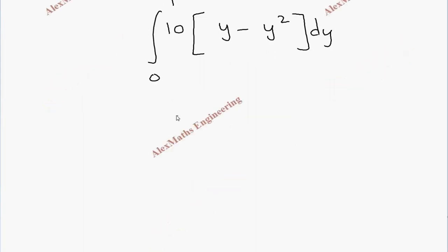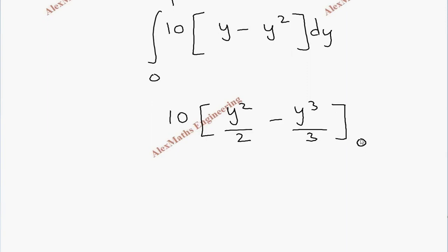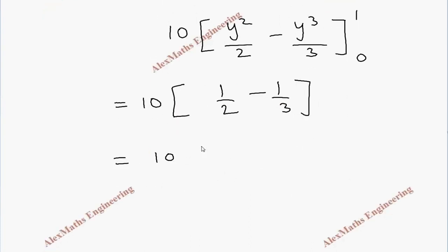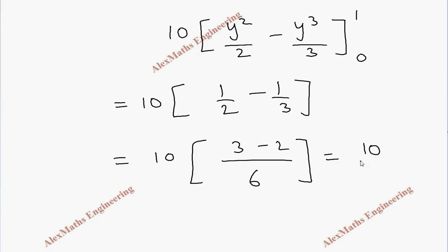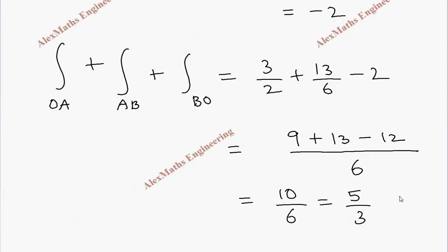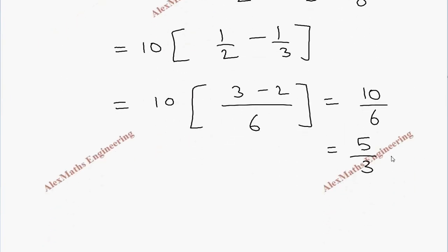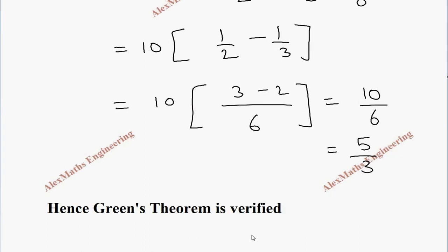Integrating 10(y minus y squared) from 0 to 1 gives 10 into [y squared by 2 minus y cubed by 3] from 0 to 1, which equals 10 into (1/2 minus 1/3). Taking LCM as 6 gives 10 into (3 minus 2)/6, which is 10/6, equal to 5/3. The left-hand side gave 5/3 and the right-hand side also gives 5/3. Therefore, Green's theorem is verified.